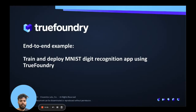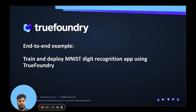In the following videos, we'll get acquainted with the various features of TrueFoundry, and we'll do this by training an actual machine learning model — a deep learning model, in fact — that can classify images. The images come from the MNIST dataset, which are images of digits from 0 to 9, and so this web application will be able to identify the digit based on the image.